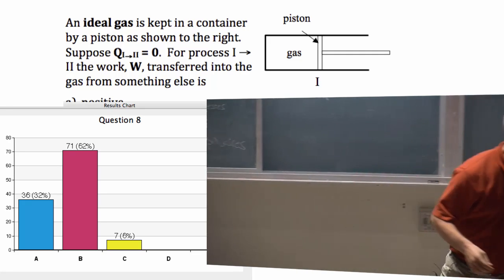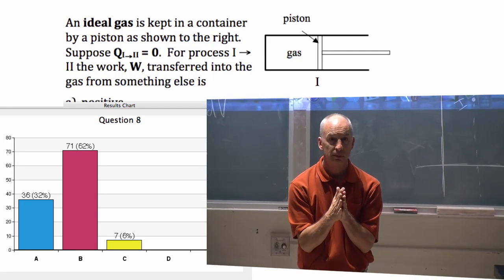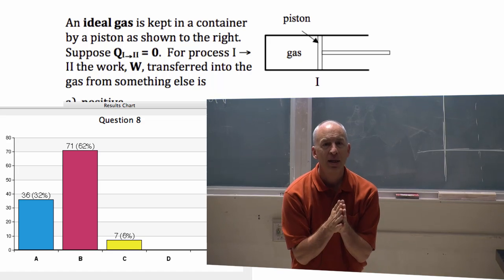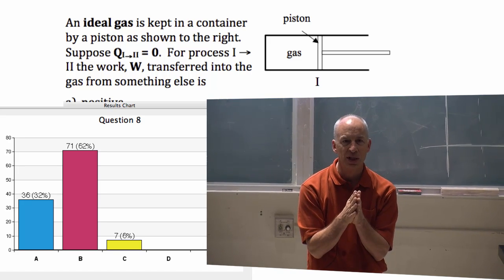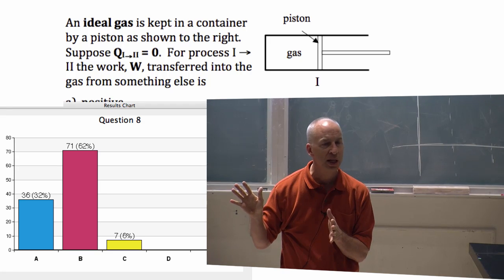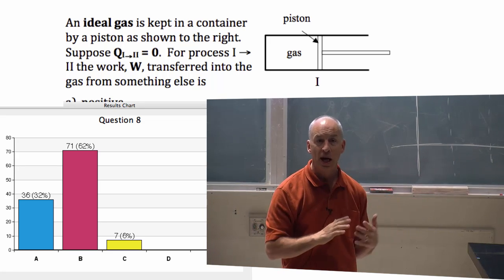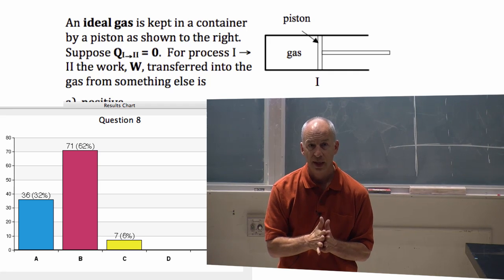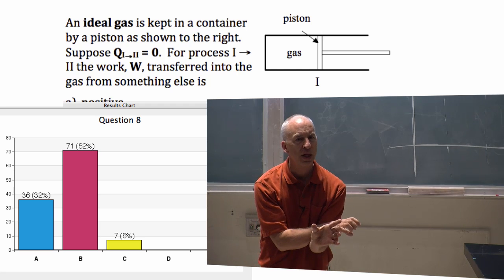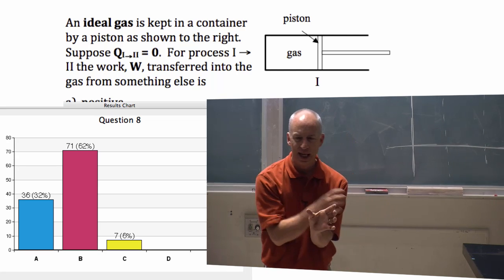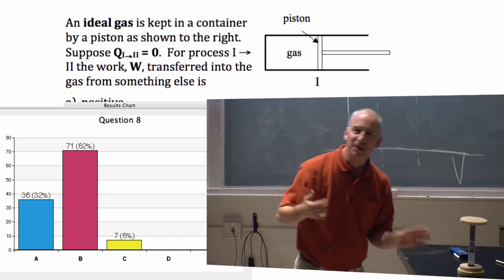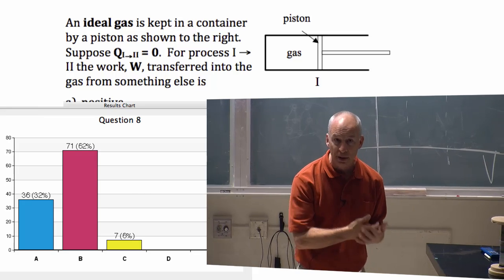Because, the gas is interacting with something. So, the gas transfers work energy. Work energy, I could talk about the work energy transferred into the gas, which is the word there, into the gas. Or, I could talk about the work energy transferred into the other thing. And, those are just the opposite of each other. The work energy transferred into the gas is the negative of the work energy transferred into the other thing.